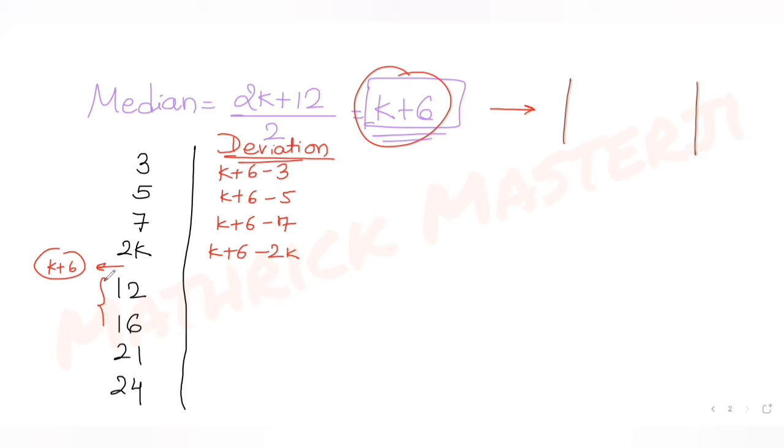For the next four terms, these terms are bigger than the median. So you have to do the opposite to find the deviation because you want absolute deviation. So 12 minus (k + 6), 16 minus (k + 6), 21 minus (k + 6), and 24 minus (k + 6).